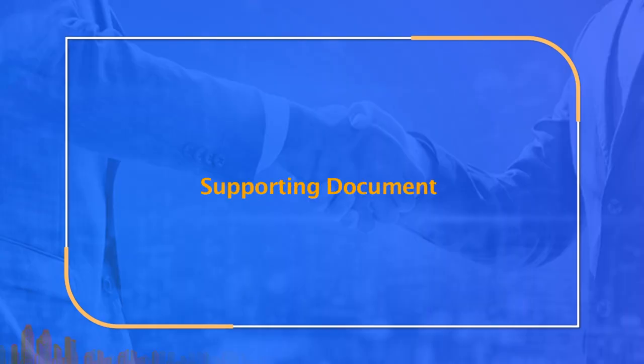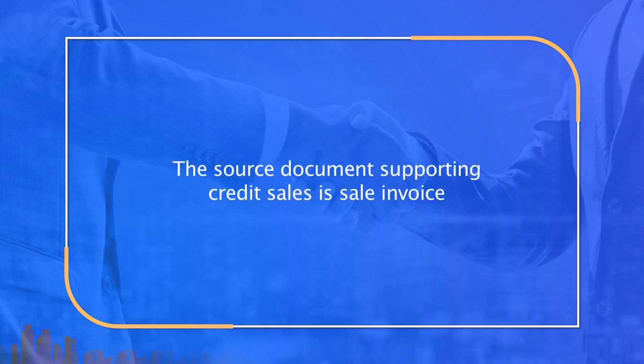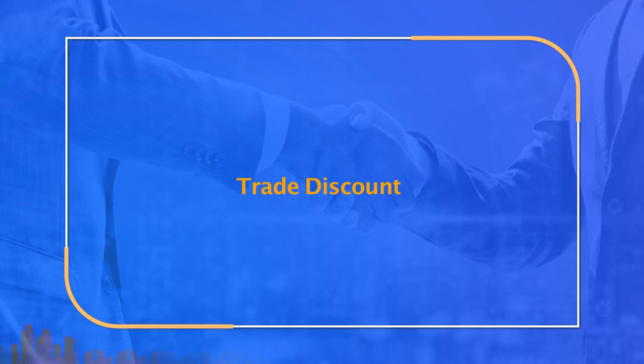The source document supporting credit sales is the sales invoice. It is made in duplicate or triplicate depending upon the accounting system. One of these copies is sent to the debtor — the credit customer — along with the goods and services. When a customer asks a vendor for supply of goods, such order is evidenced through a purchase order form, which discloses the quantity and quality of goods ordered along with rates and discounts. Each purchase order has its unique number, which is put on the sales invoice for reference.